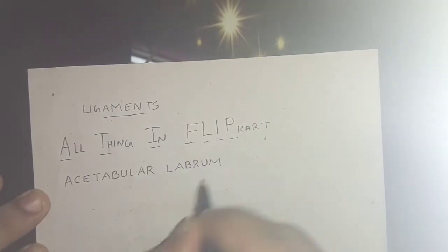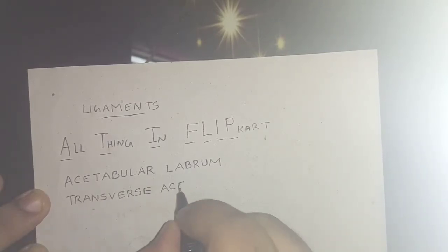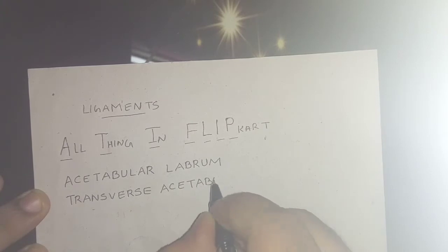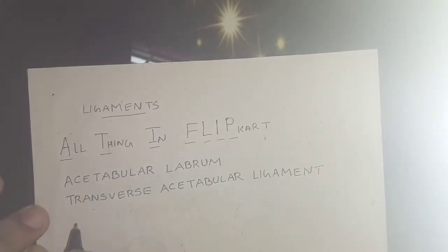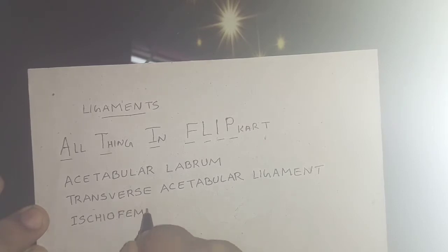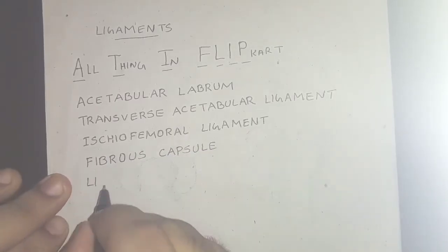In 'ATI': the A stands for acetabular labrum, the T stands for transverse acetabular ligament, and the I stands for the ischiofemoral ligament. In 'FLIP': the F stands for the fibrous capsule.